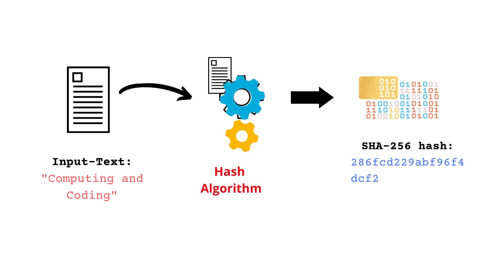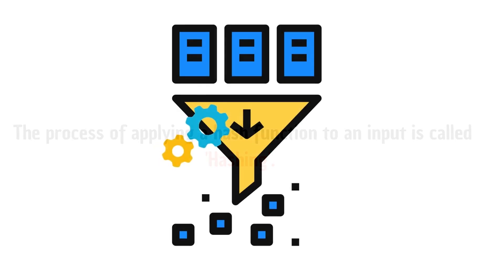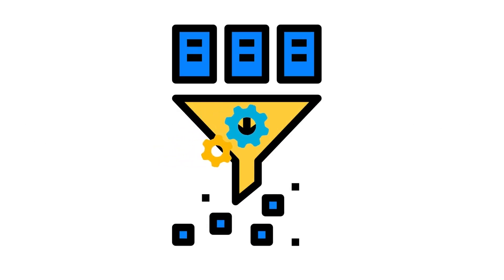Any change in the input data, no matter how small, will result in a very different hash value. This is known as the avalanche effect and it's one of the important features of hash functions. The process of applying a hash function to an input is called hashing. The exact details of these mathematical operations depend on the specific hash function being used.